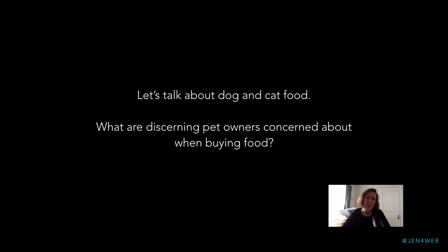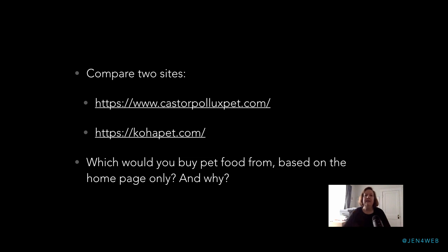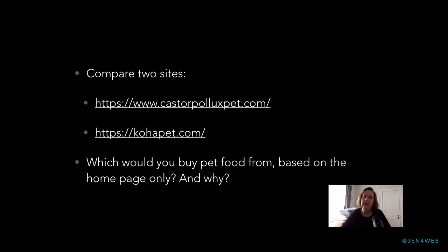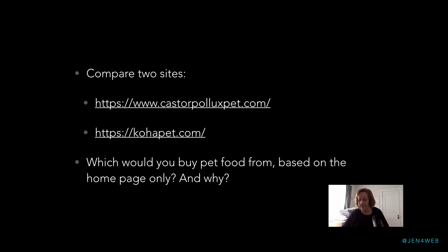We did this as an exercise in the workshop, looking at some pet food websites. If you want to pause the video and think about it: if you've been a pet owner at some point, you have insight into what you think about when buying pet food — what concerns come to mind. The exercise is to go to castorpolluxpet.com and coapet.com — pretend these are the only two pet food sites in the entire world. Look at just their homepages and make a buying decision: which brand are you going to buy, and why?